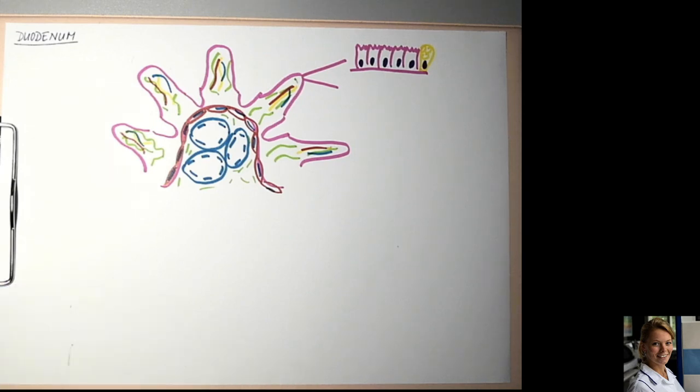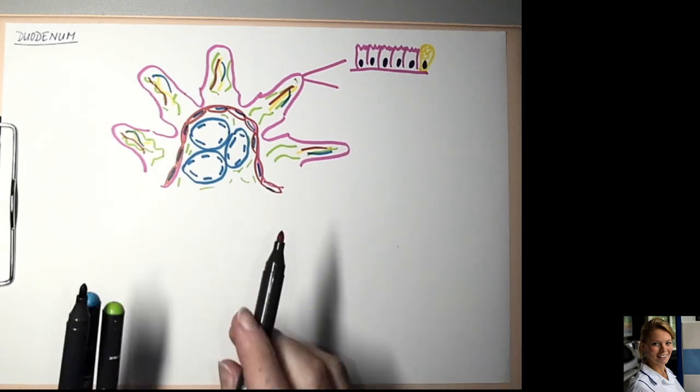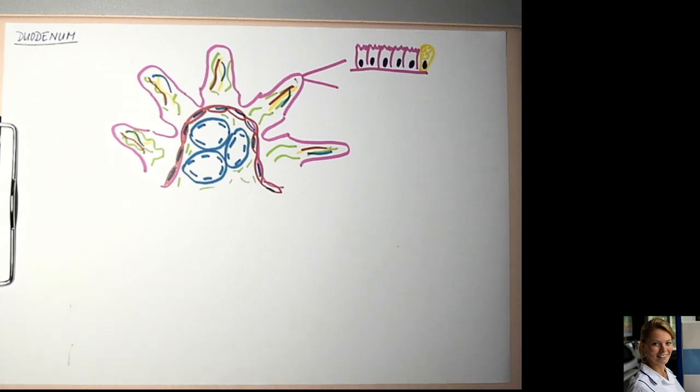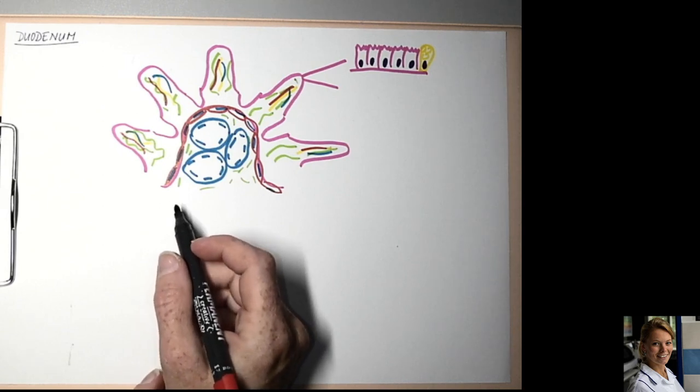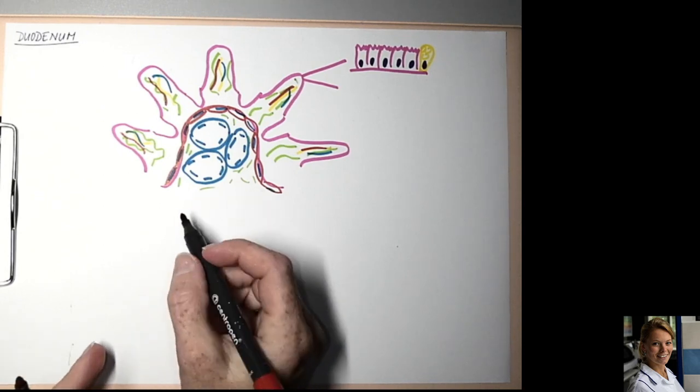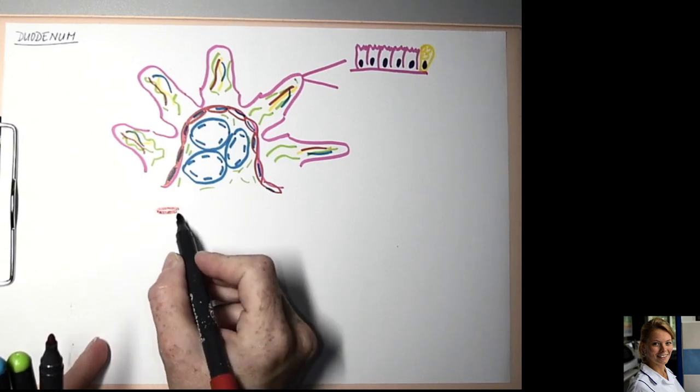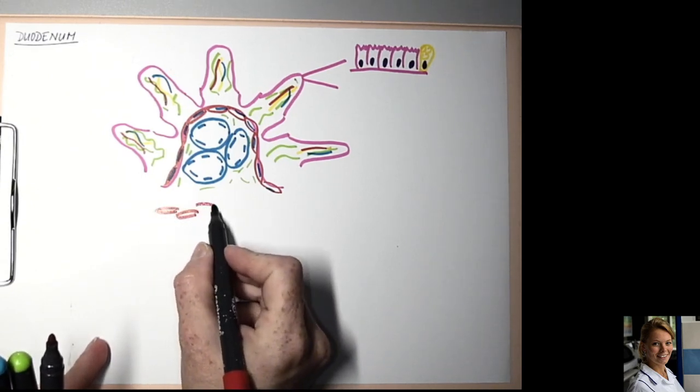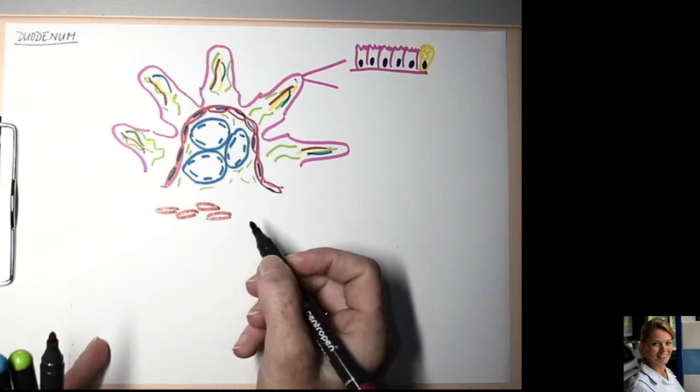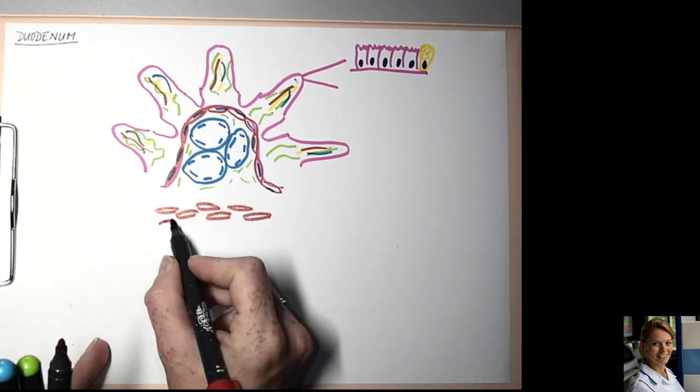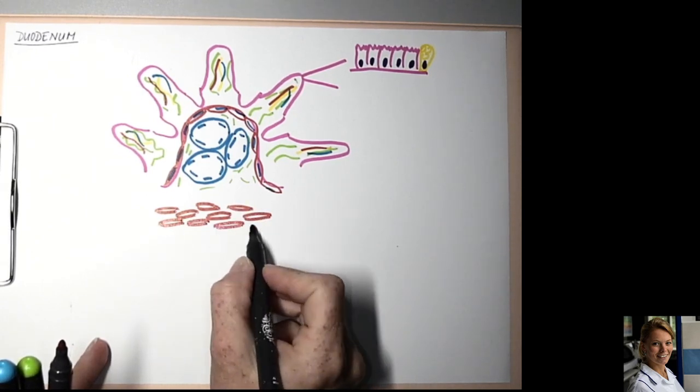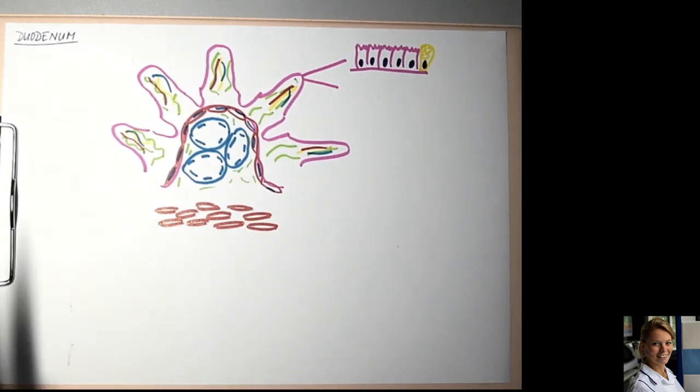The next layer is tunica muscularis externa, composed of smooth muscle cells, subdivided into inner circular layer and outer longitudinal layer. Smooth muscle cells in the circular layer are visible on longitudinal section when we observe the cross section through the duodenum.